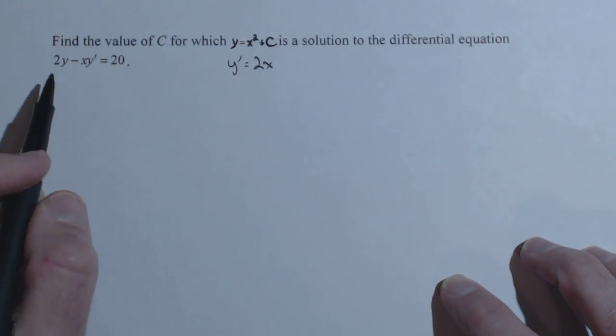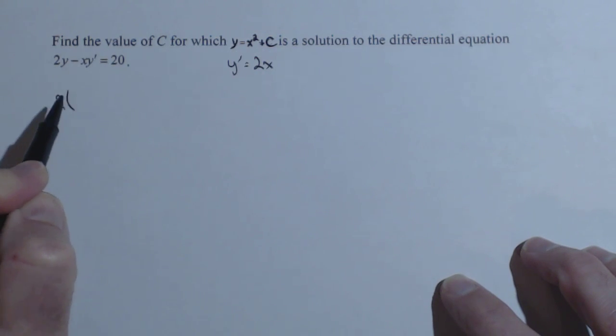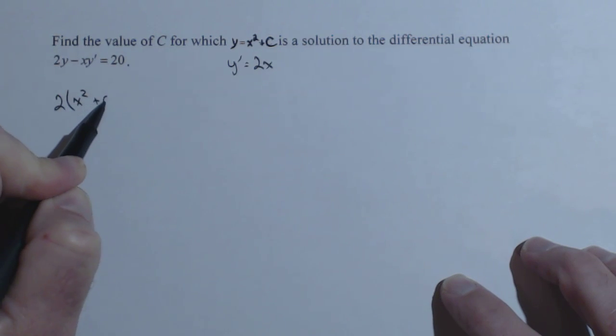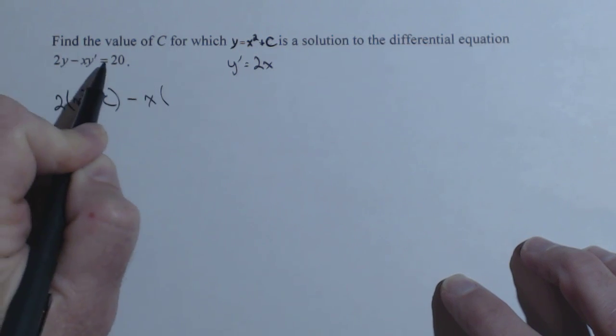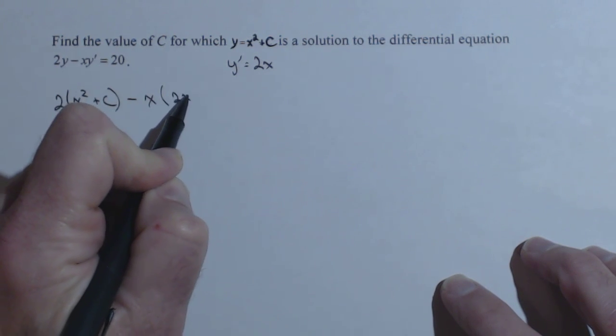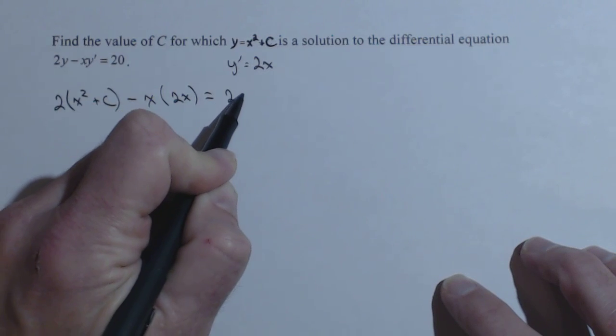Now we're going to plug these into our original equation. So 2 times y, well y is equal to x squared plus C, minus x times y prime, which is 2x, equals 20.